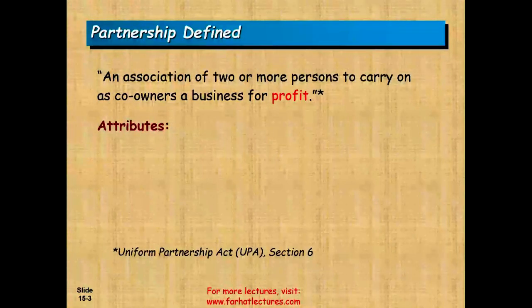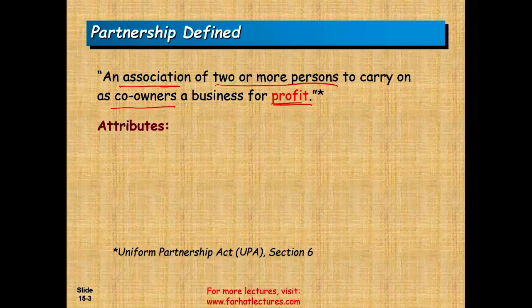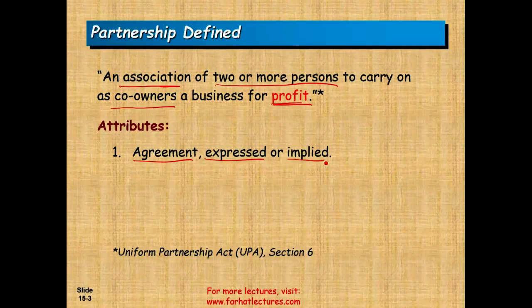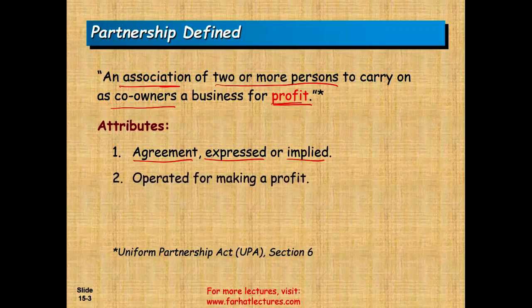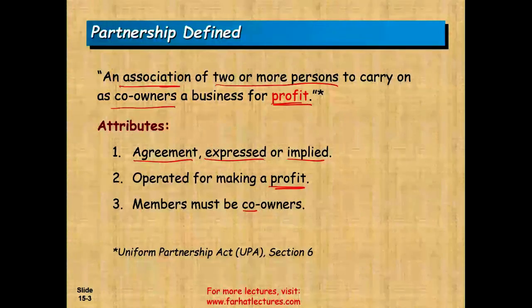So let's talk about partnership. What is a partnership? A partnership is when two or more individuals decide to carry on a business together to share the profit. It's an association of two or more persons to carry on as co-owners of a business for profit. You must have an agreement — it doesn't have to be in writing, it can be oral or implied. As long as you are working together and sharing the profit, technically you are in a partnership. The purpose is to make a profit, and each member is a co-owner who can run the company based on what was agreed upon.